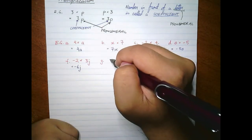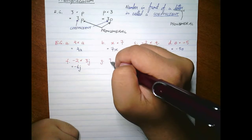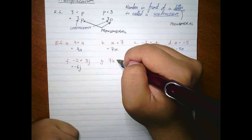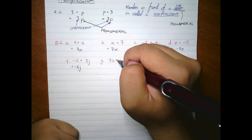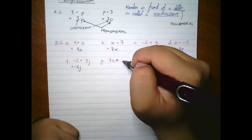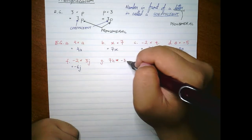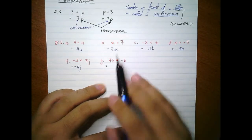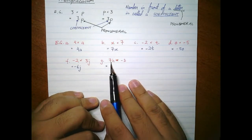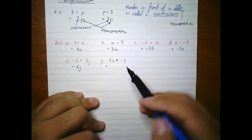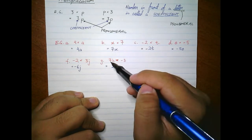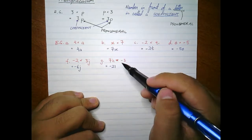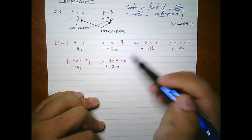For example g, if we had 7h times negative three: remember, it's the numbers first. Seven times three is twenty-one, and a positive times a negative is a negative, giving us negative 21h. That h remains where it is.